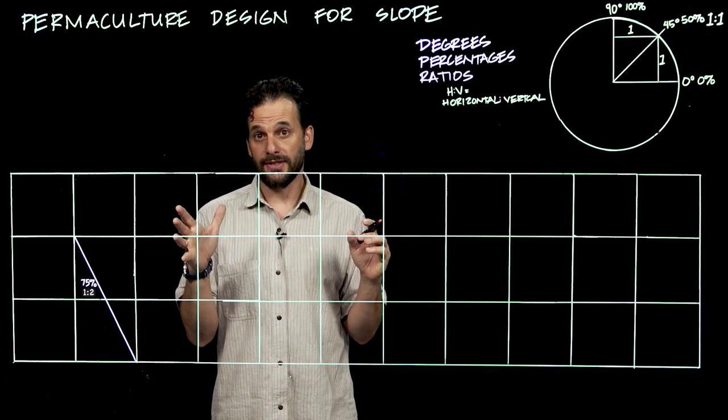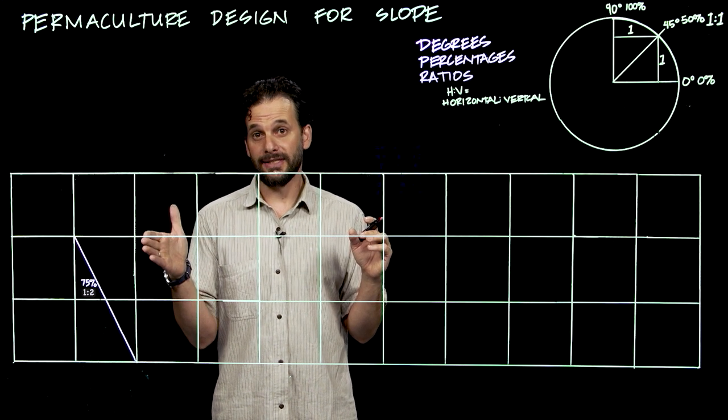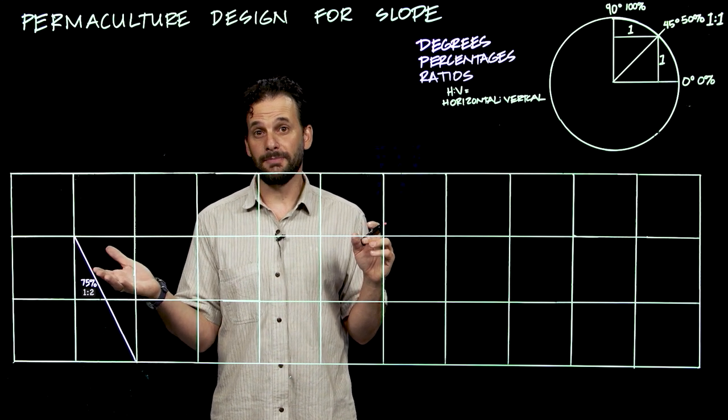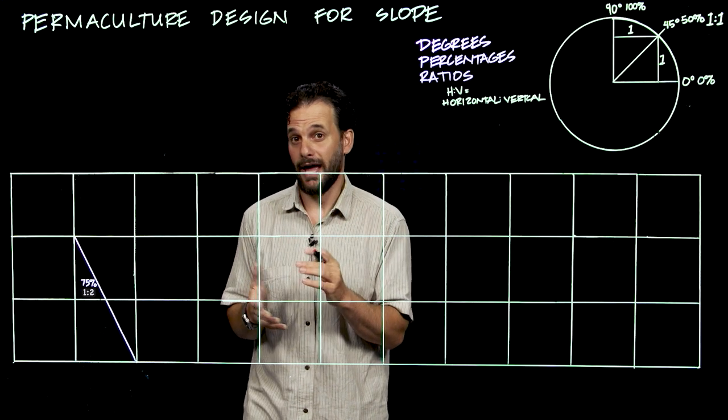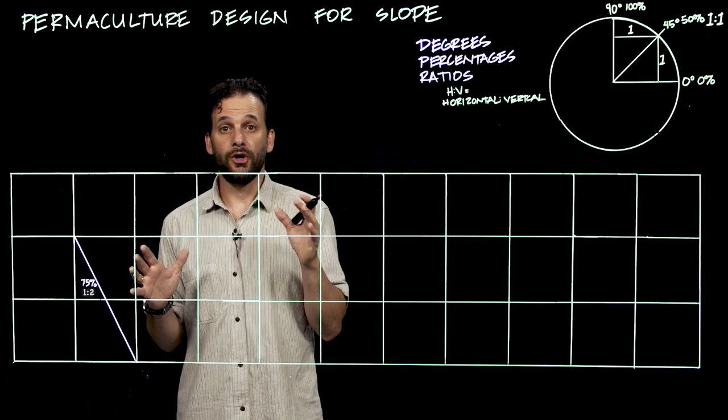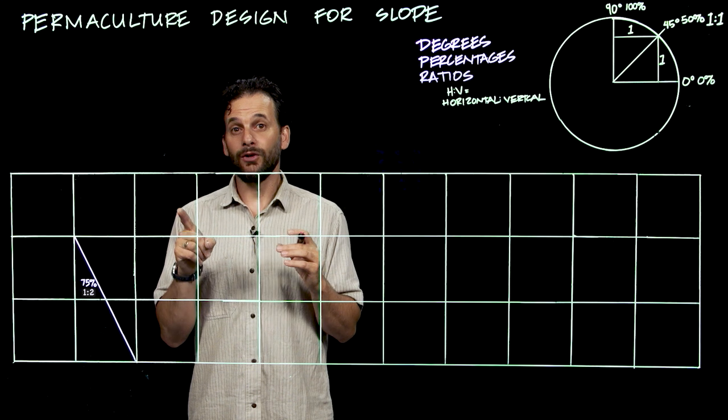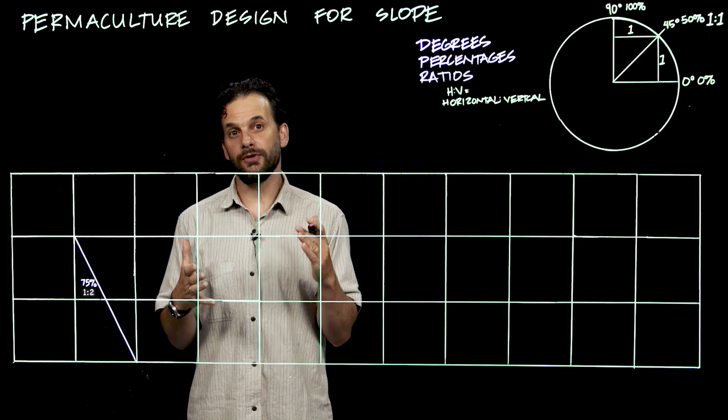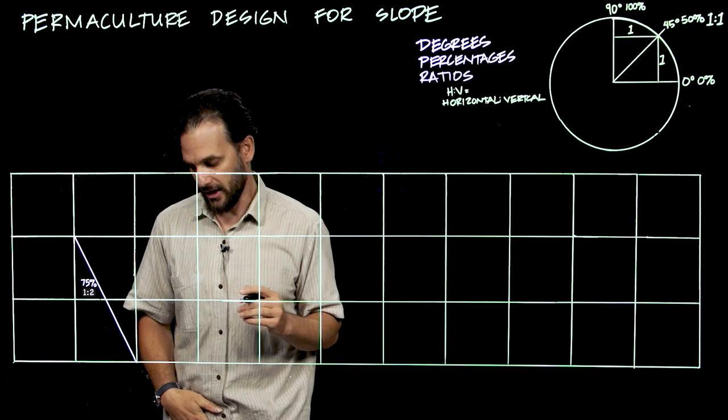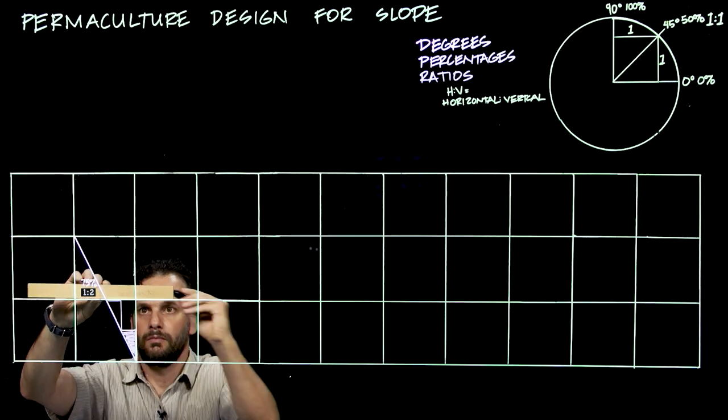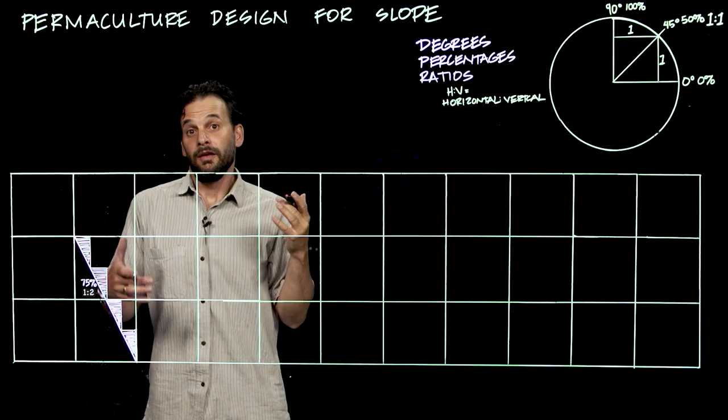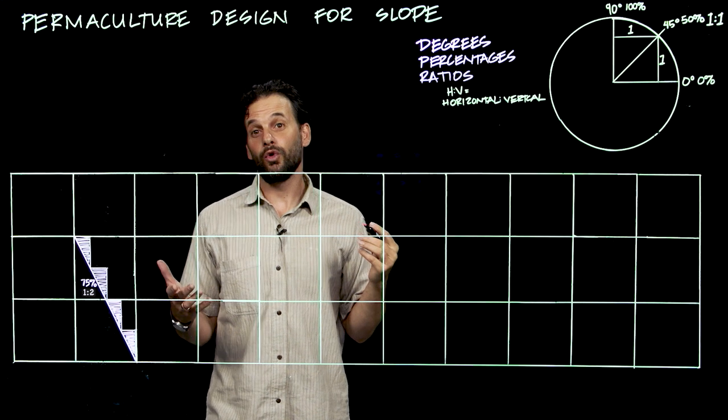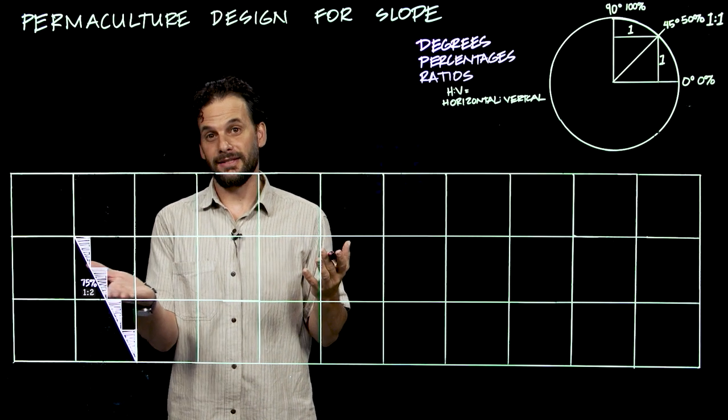So terraces on this kind of slope also exist in Peru, in the Andes Mountains, and probably other places in the world. But in order to terrace a slope like this, you need a really tall terrace wall to get a small growing area.